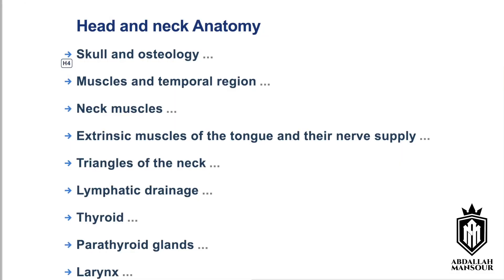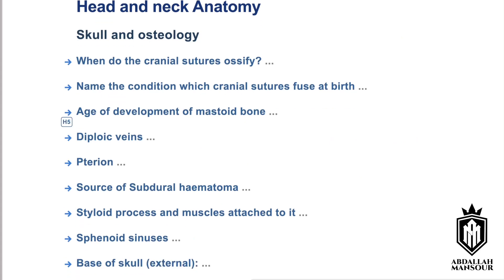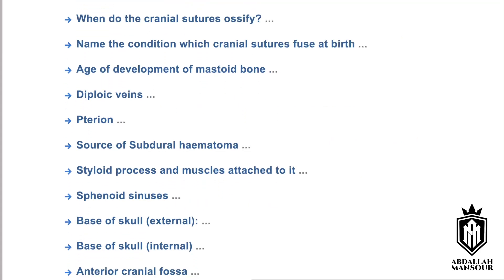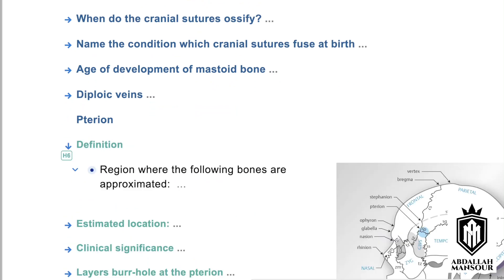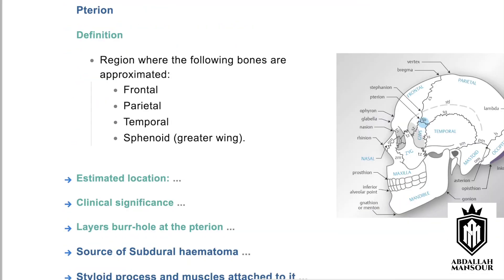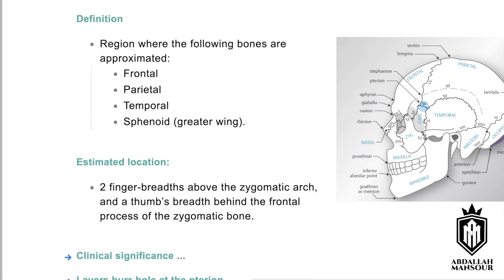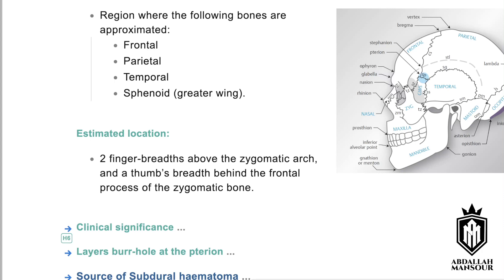Here are the mock test questions for the anatomy exam. Starting with the pterion: what is the definition of the pterion? It is the meeting point between four different bones — the frontal, parietal, temporal, and the greater wing of the sphenoid. The estimated location is usually two finger-breadths above the zygomatic arch and a thumb-breadth behind the frontal process of the zygomatic bone.